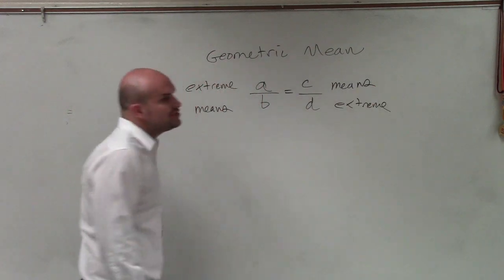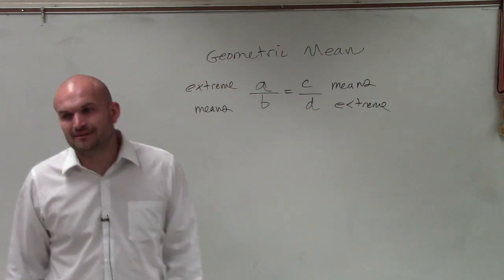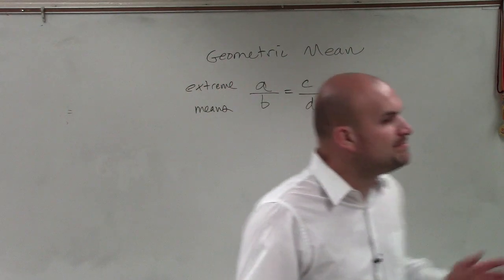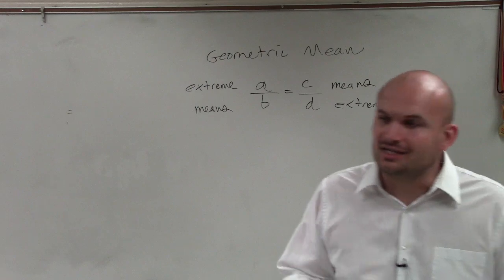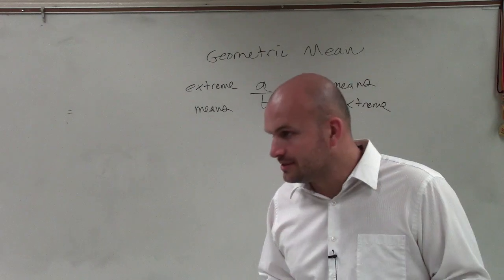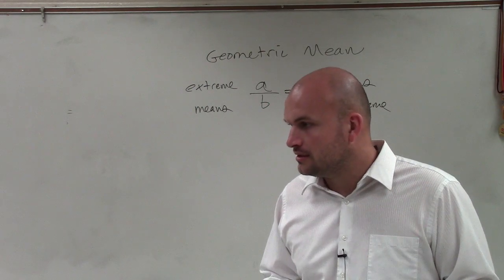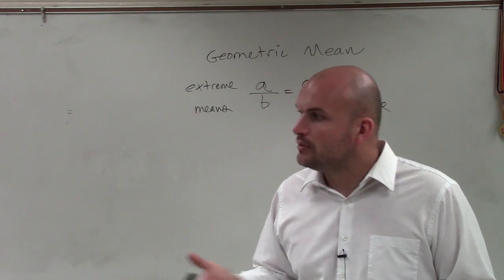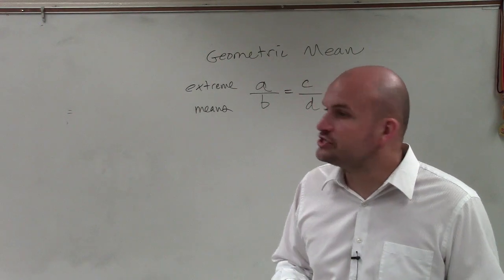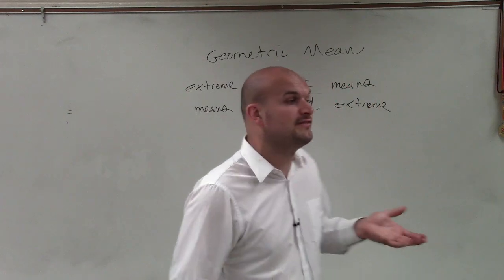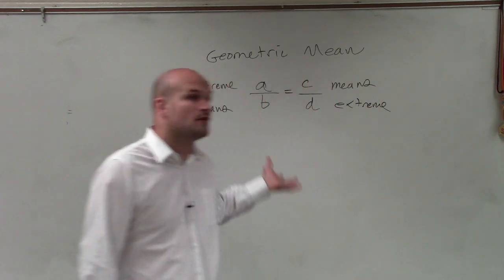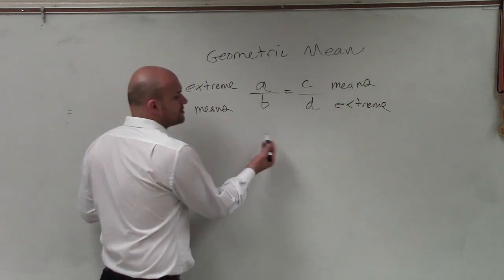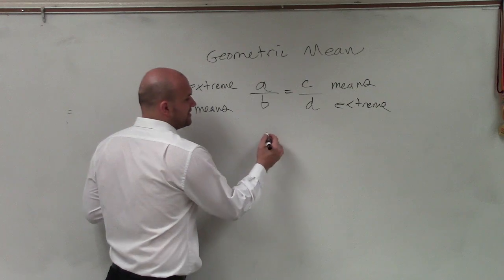Now, what the geometric mean means is when the means are exactly the same. We can solve for our geometric mean by taking the square root of the product of our extremes. So let's go and take a look at that.